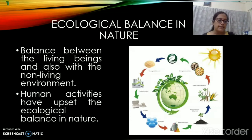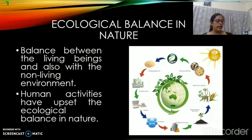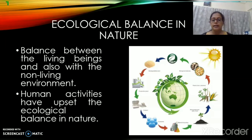So what happens if the ecosystem is disturbed? Ecological balance is very, very important in nature. It is a balance between the living beings and the non-living environment. Both the balance of living and non-living things is required, and that is why it is known as ecological balance. Human activities generally upset the ecological balance in nature. That is the problem — we humans upset all the ecological balance. Sometimes we cut down the trees and create a lot of pollution. This is how ecological balance in nature gets disturbed.